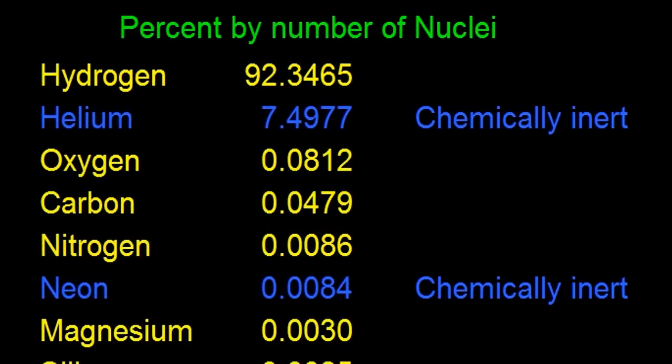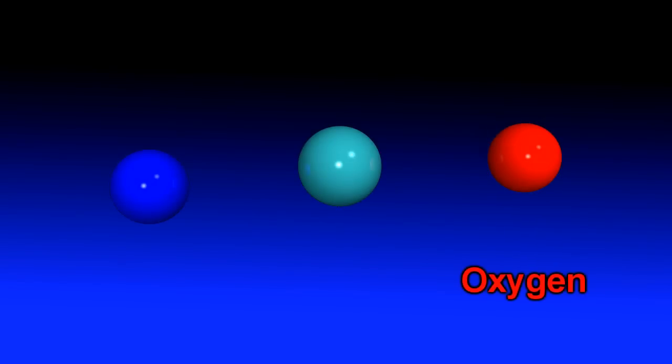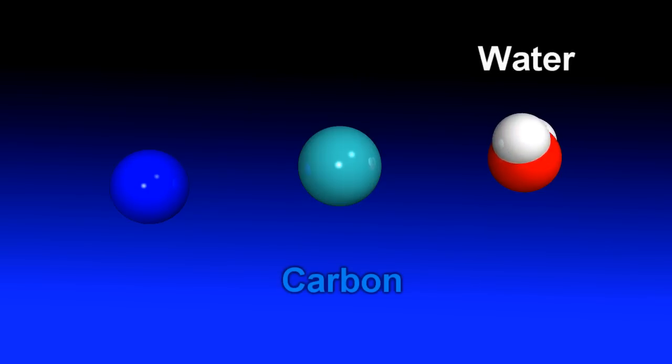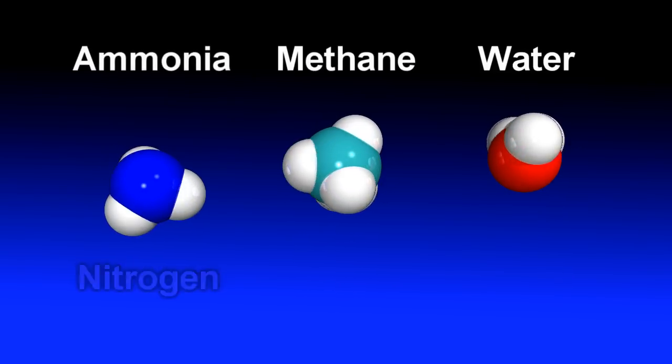As by far the majority of this is hydrogen, most of these elements chemically exist as their hydrides. That is oxygen exists as the dihydrate, H2O, commonly called water. Carbon exists as the tetrahydride, commonly called methane, and for nitrogen it's the trihydride, ammonia.